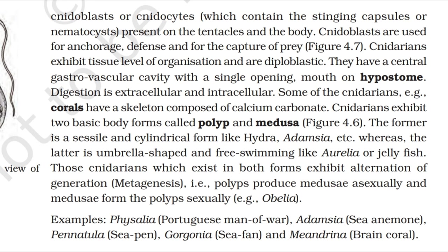Cnidarians exhibit two basic body forms: polyp and medusa. The former is a sessile and cylindrical form like Hydra, Adamsia, etc. The latter is umbrella-shaped and free-swimming like Aurelia or jellyfish. Those cnidarians which exist in both forms exhibit alternation of generation, i.e., metagenesis — polyps produce medusae asexually and medusae form polyps sexually, e.g., Obelia. Examples of cnidarians: Physalia (Portuguese man of war), Adamsia (sea anemone), Pennatula (sea pen), Gorgonia (sea fan) and Meandrina (brain coral).